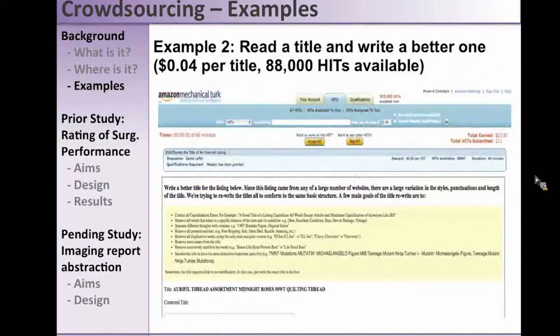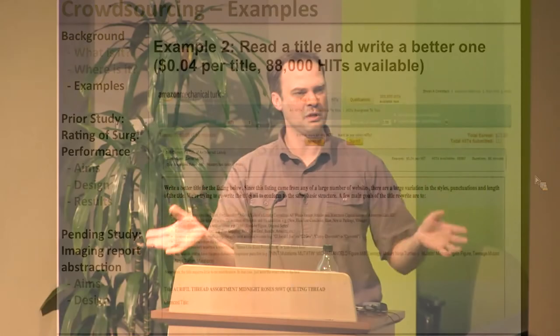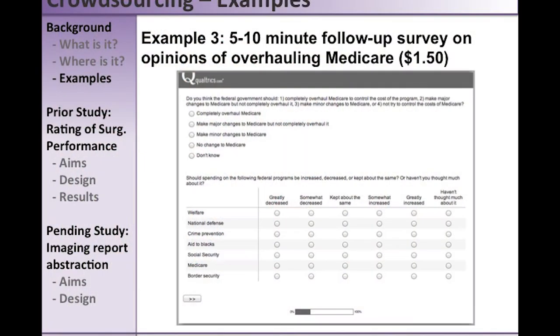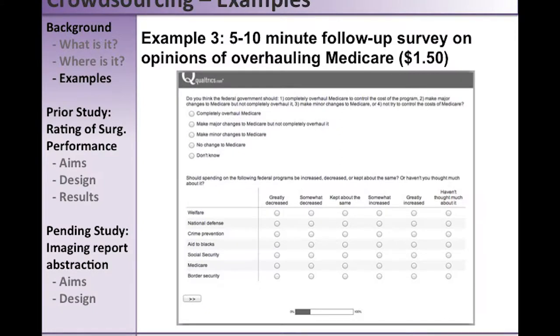Another example: four cents per title, with 88,000 of these HITs available — basically read a title and make it better, like turning 'statue life-sized portrait bust' into 'life-sized bust.' Then there's the survey I signed up for — a $1.50 survey just to get a screenshot, and then they liked my responses and invited me to another $1.50 survey. Both took about nine minutes. If you translate that into an hourly rate, it's roughly minimum wage.